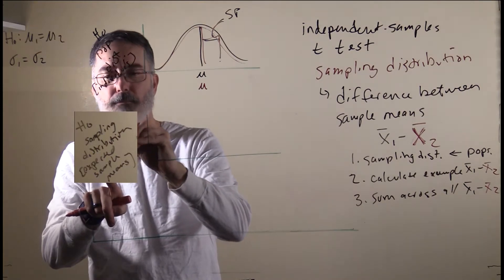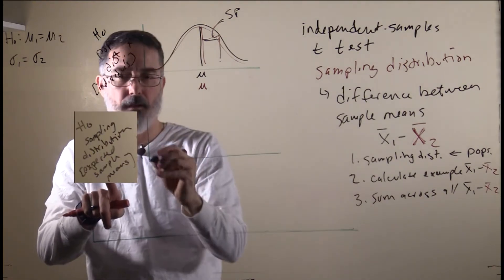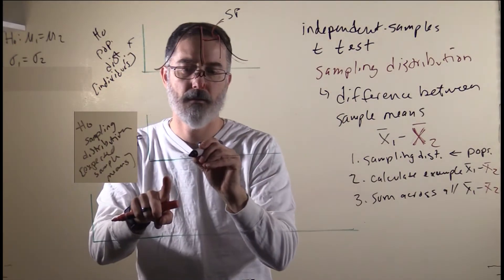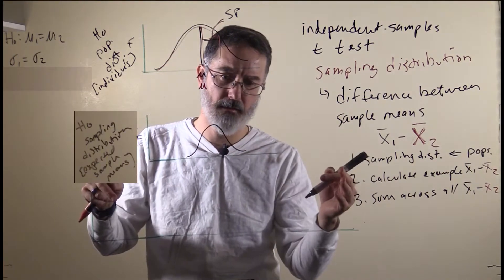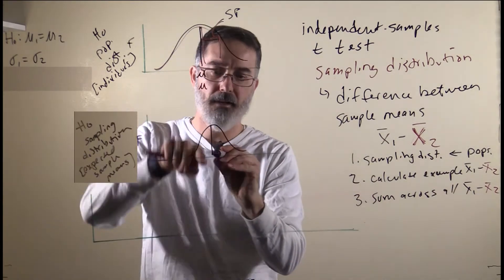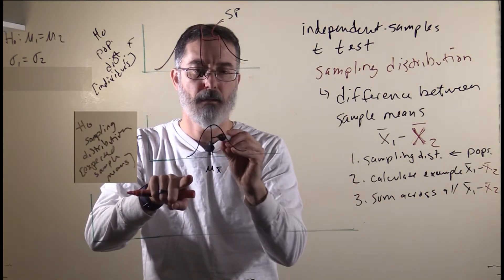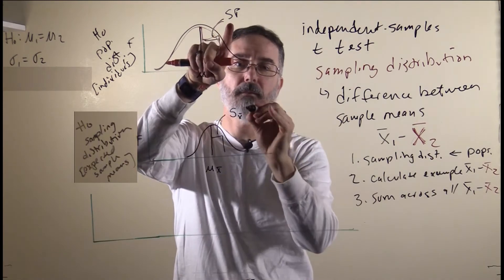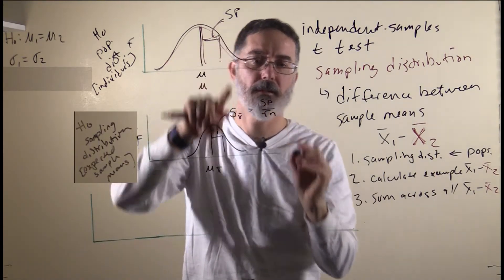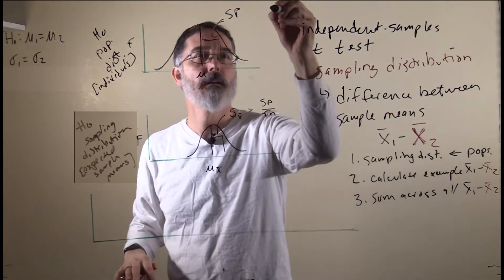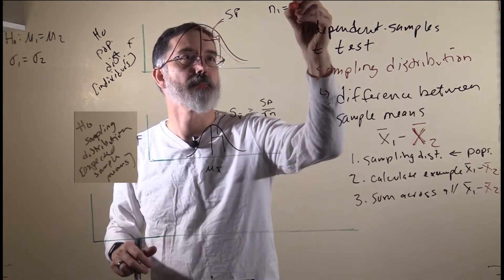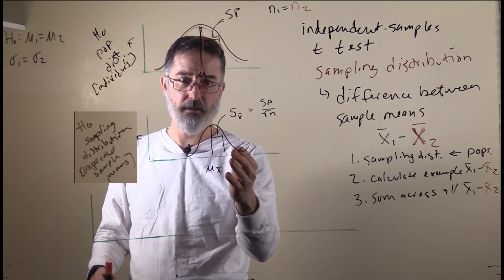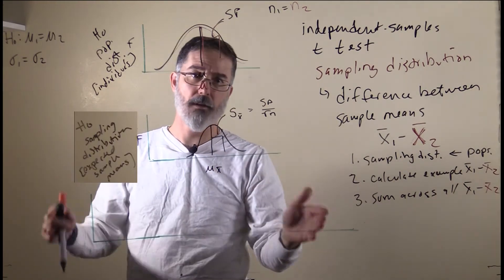We are just looking at expected sample means. This is the exact same process we went through for a single sample t-test. For the black distribution, it is going to be almost normally shaped — it is actually a t-distribution. The mean is going to be the same, and the standard error, the standard deviation, is just going to be S-pool divided by the square root of the sample size. We are sticking with equal sample sizes for the two groups because the math is easier.